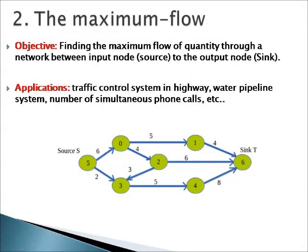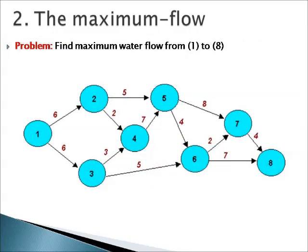The second network model is called Maximum Flow. From its name, we need to find the maximum flow between the input node, which is the source, and the output, which is the sink. Applications include location traffic control systems, highway and water pipeline systems, and phone calls. Let's try to solve this problem together.